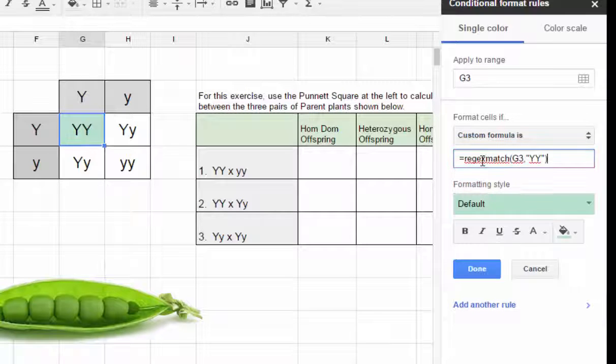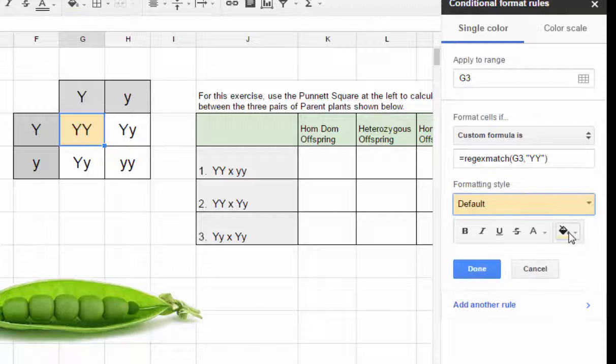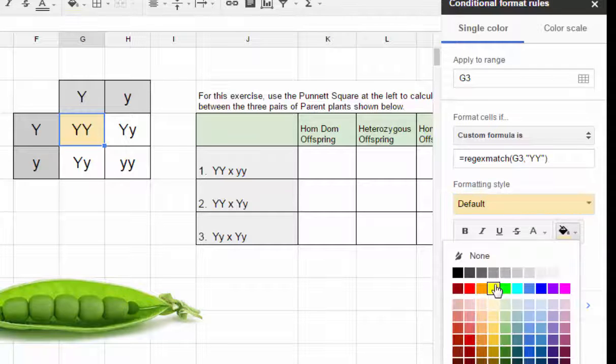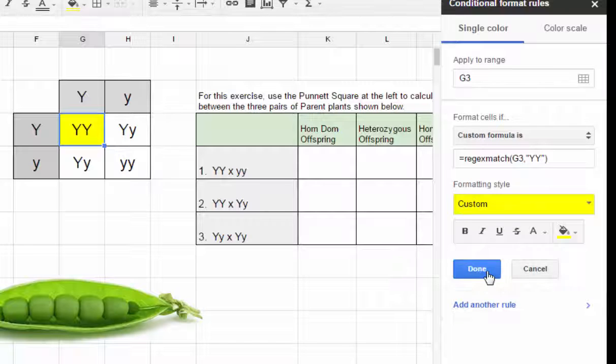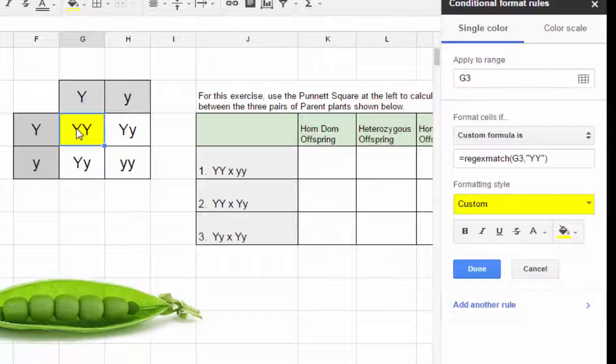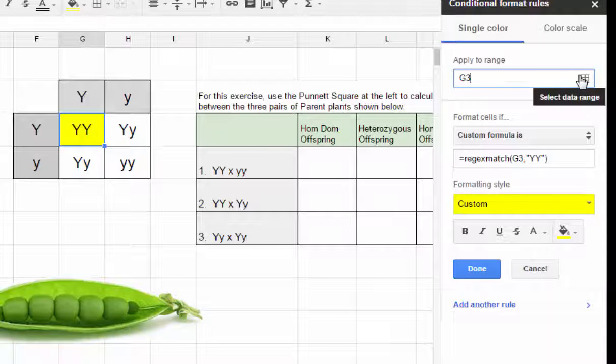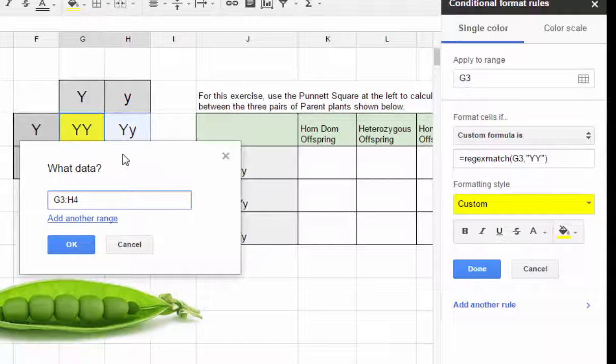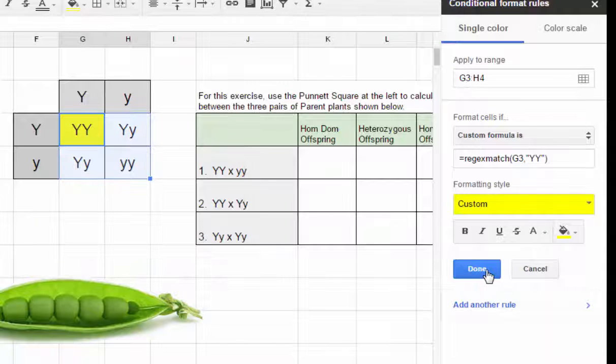We'll say for cell G3 we are looking for capital Y capital Y, close our parentheses, and then we will choose the color that we want associated with that. For a Punnett square in this case, since yellow is the dominant color and we have two dominant alleles, we'll make this yellow or we can choose a fill color that's a little bit brighter and we hit done. So that it applies to these other cells, we can go in and apply this to the entire range and just highlight all of those cells and hit done.